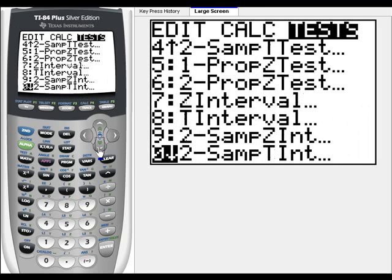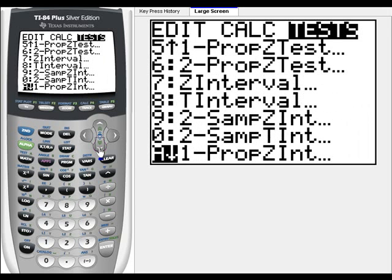2-sample, no, that won't work. How about 1 proportion Z-interval, so A. So, press ENTER.